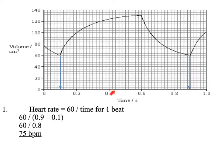The time between the two troughs is 0.9 minus 0.1, which is 0.8. So 60 divided by the time, which was 0.8 seconds, gives you an answer of 75 beats per minute. So the heart rate is 75 beats per minute.